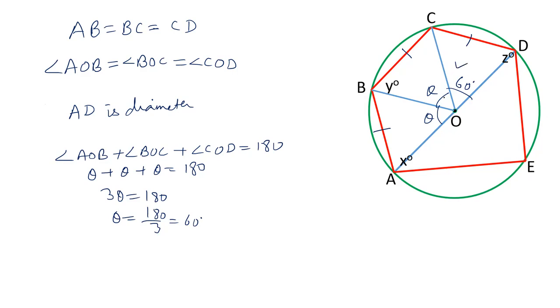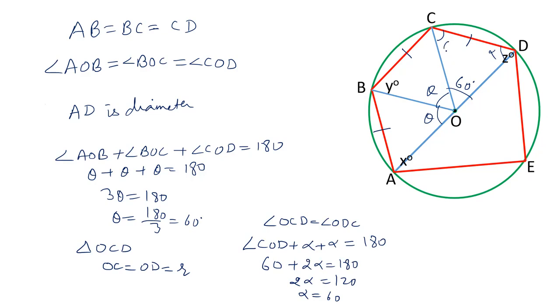Now in triangle OCD, OC and OD are equal to radius, and therefore angle OCD equals angle ODC. Let's say this angle is alpha plus alpha. In triangle OCD, angle COD plus alpha plus alpha, that is angle OCD plus angle ODC equals 180. Angle COD is 60 degrees. The value of 2 alpha is 120 and alpha is 60 degrees. This is an equilateral triangle with each angle as 60 degrees.